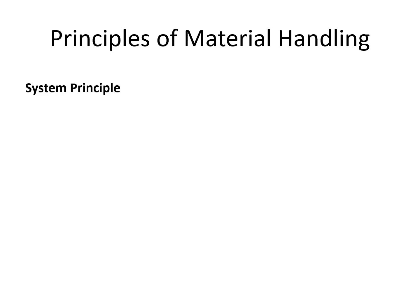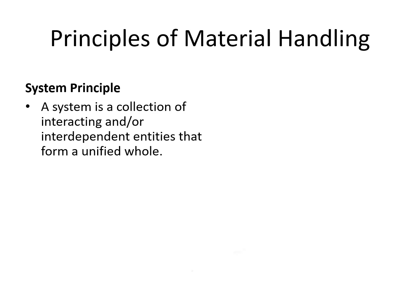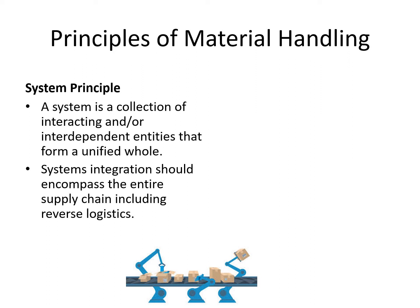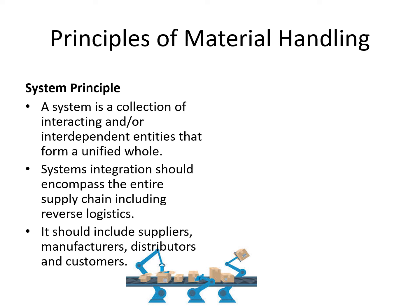The systems principle implies that the complete material handling should be looked upon as a complete whole system. A system is a collection of interacting and or interdependent entities that form a unified whole. Systems integration should encompass the entire supply chain including reverse logistics, and should include suppliers, manufacturers, distributors, and even customers.